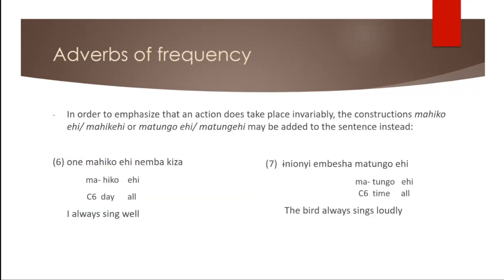But if we actually want to stress that an action does take place invariably, the constructions mahi goehi, or contracted mahi kehi, or matunguehi, can be added to the sentence instead. So for example, I always sing well could also be expressed by saying onimahiko ehinemba kisa.